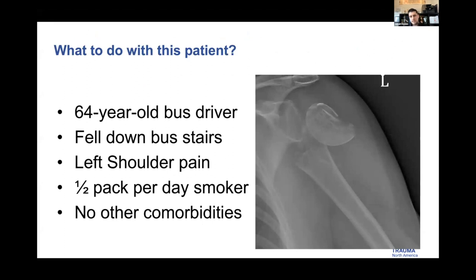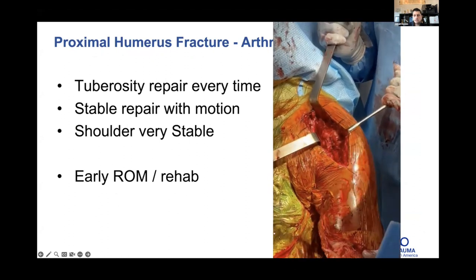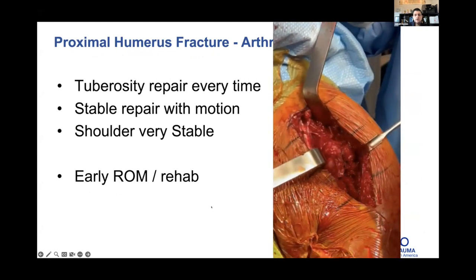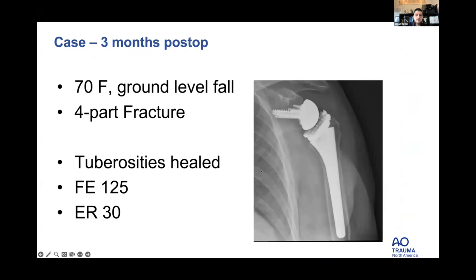Looking at the data — the thickness of the head, the four-part fracture, the dislocation, and this 64-year-old patient — I start thinking she may need an arthroplasty. I performed a reverse shoulder arthroplasty, repairing the tuberosities every time — the literature is very consistent that this creates better outcomes. You can see it's very stable. I get them moving early, which is very important.